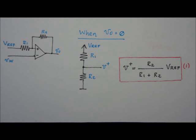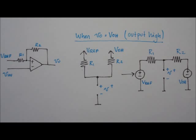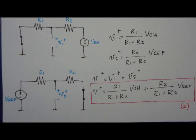So, when V0 is equal to zero, the voltage at the positive terminal of the op-amp is equal to R2 over R1 plus R2 times Vref. When V0 is equal to V0H, we can use superposition to find out the expression of the voltage V+.